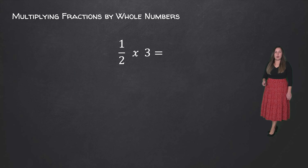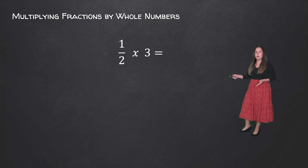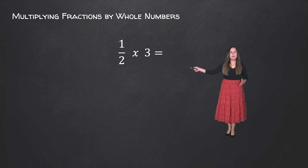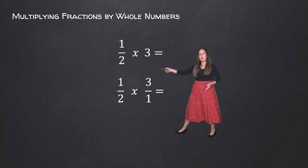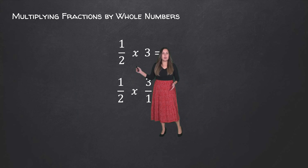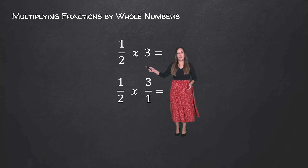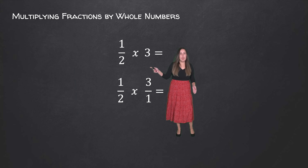So 1 over 2 times 3 is equivalent to 3 over 2, which is equivalent to 1 and a half. If we didn't have our model, we would take this problem and rewrite it so that both numbers are in fraction form. We'll rewrite the 1 over 2 and then take 3 and write it in fraction form.